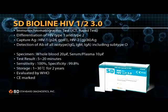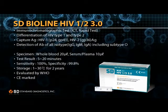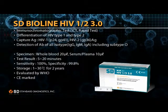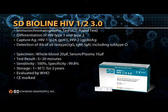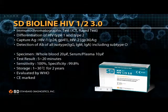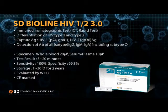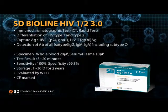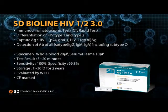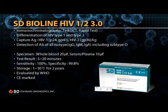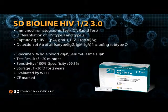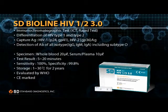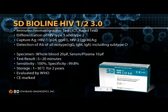SD-BioLine HIV 1 and 2 rapid test is designed for differential detection of all isotype antibodies specific to HIV type 1, including subtype O, and type 2 simultaneously. Serum, plasma, and whole blood can be used as specimens. Test result time is only 20 minutes. Storage condition is room temperature for two years. Sensitivity is 100% and specificity is 99.8%.